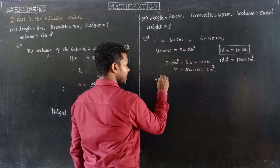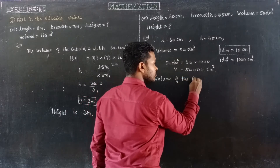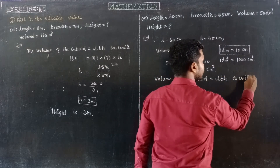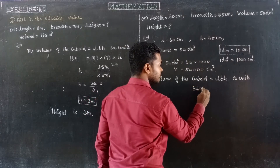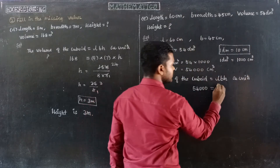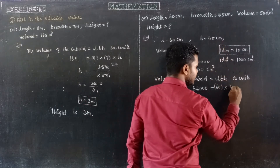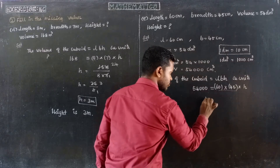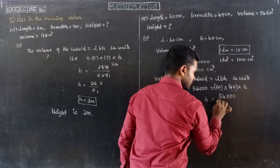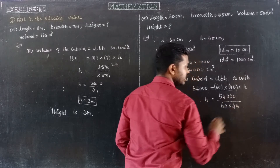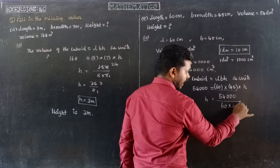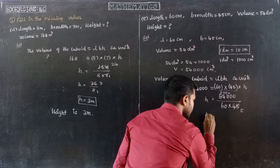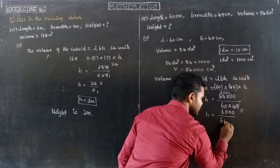So the volume of the cuboid is equal to L × B × H in cubic units. Therefore, 54,000 is equal to length 60 centimeters into breadth 45 centimeters into height. So height is equal to 54,000 divided by 60 into 45. Cancelling: 5 nines are 45, so we divide to get 6,000 divided by 60 into 5.